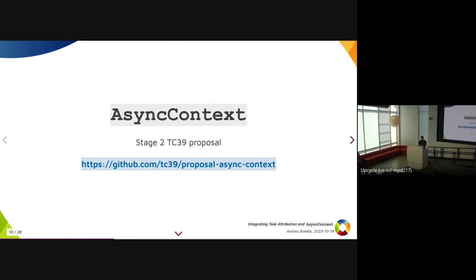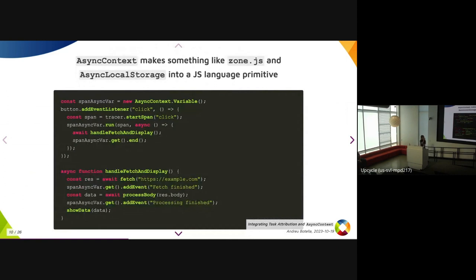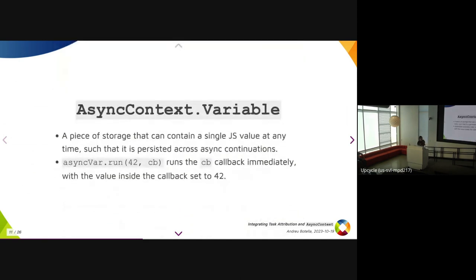That's what the Async Context proposal is meant to solve. It's a Stage 2 TC39 proposal that makes something like Node.js AsyncLocalStorage into a JavaScript language primitive. You create an AsyncContext.Variable and use it as the span. Rather than setting a global variable, you call spanVar.run which sets the span for that function and anything that spawns from it — whether actual async continuations with await, or even setTimeout. To get the value, you call spanVar.get, which returns the value associated with the current async flow of control.